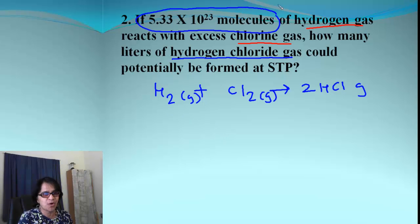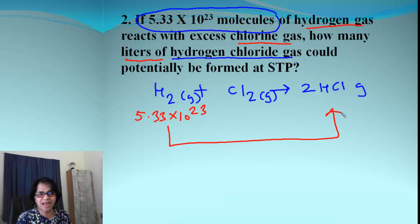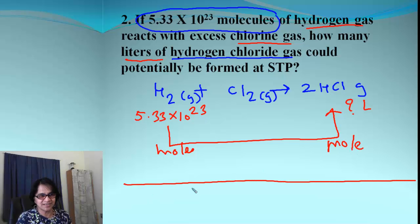That is my beginning point. We have 5.33 times 10 to the 23rd molecules of hydrogen gas. So let's write down that. And then where is the end point? The end point is how many liters of hydrogen chloride gas we need. So that's my roadmap. And then what I need is how many liters. And the bridge here, the bridge is always mole-mole ratio. So that's simple.